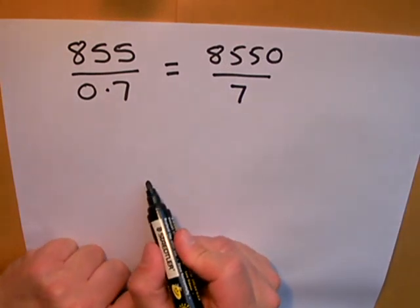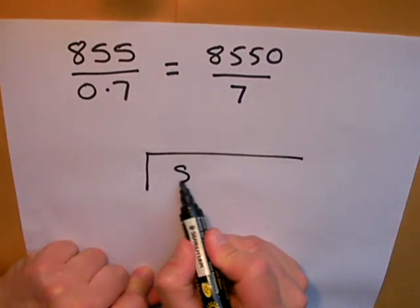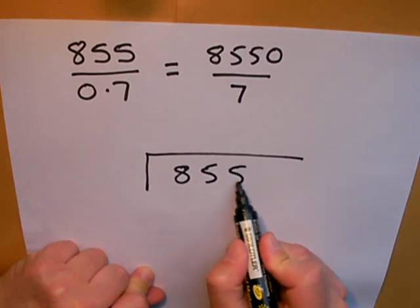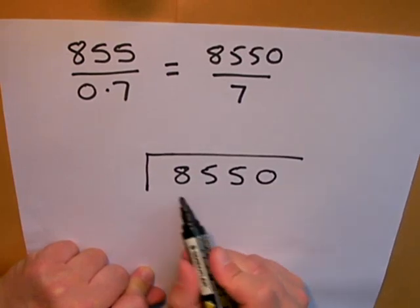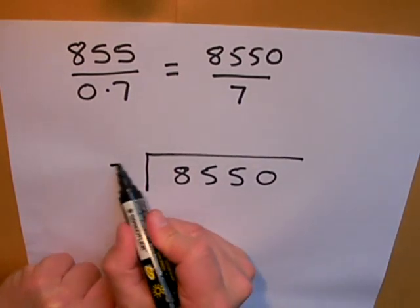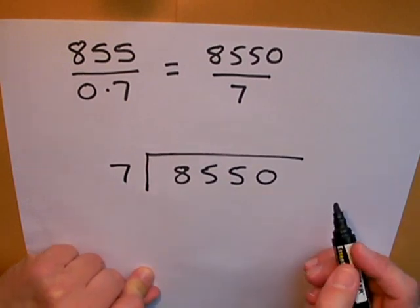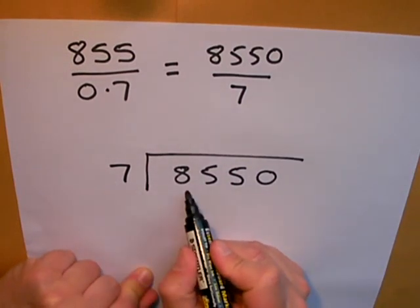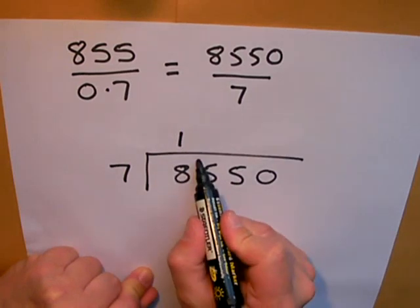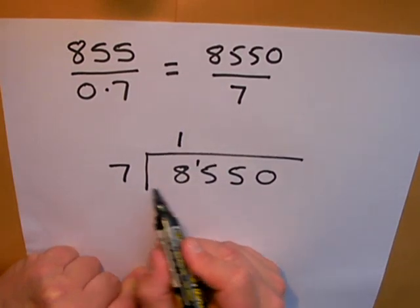Now what I'm going to do is work out the easier of those two questions, 8550 divided by 7. I'll start by saying how many sevens into 8? 8. 1 remainder 1. How many sevens go into 15? That will be 2 remainder 1.